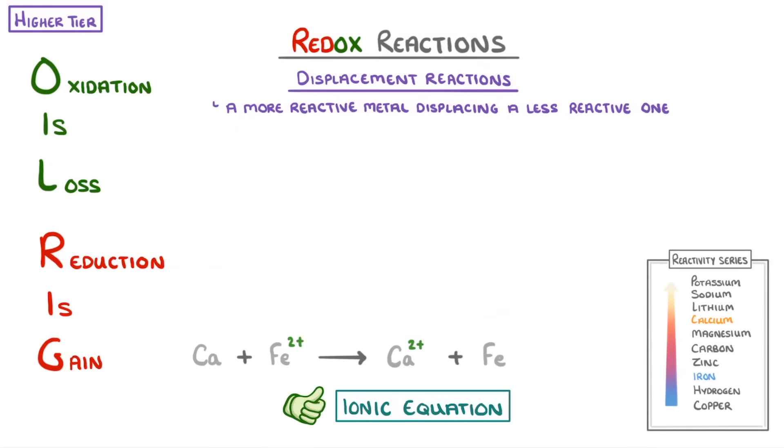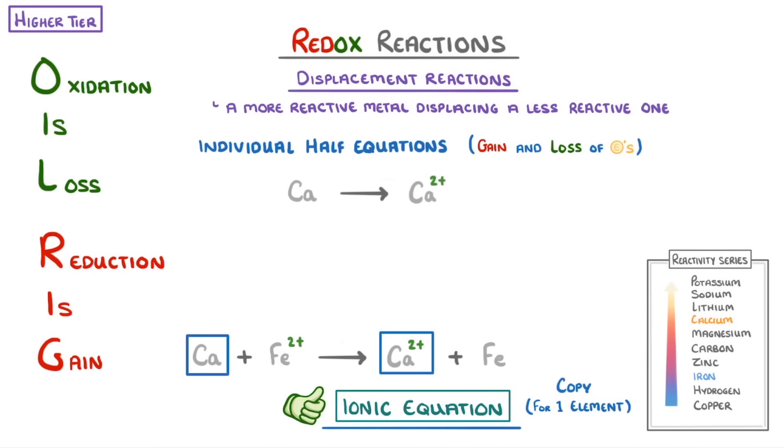We can actually break this down even further though, by writing individual half equations, which show the gain and loss of electrons for each of the elements involved. To do this, we first copy the ionic equation, but only for one particular element. So for calcium, we would write that a neutral calcium atom goes to form a calcium 2+ ion. Next, we need to add our electrons to make the charges balance. As the calcium atom loses two electrons, we can think of the calcium ion as one product and the two electrons as another product. So we put plus two electrons on the right-hand side.